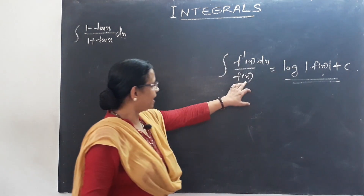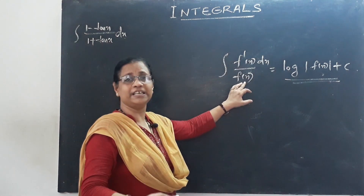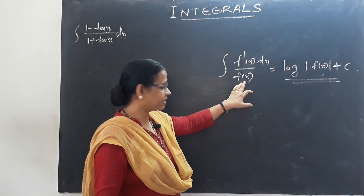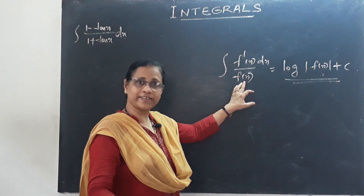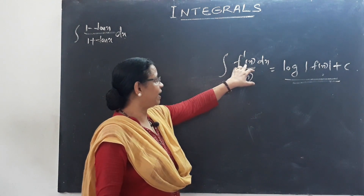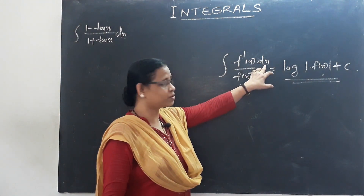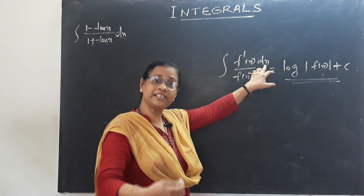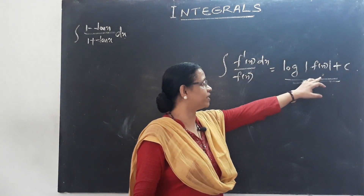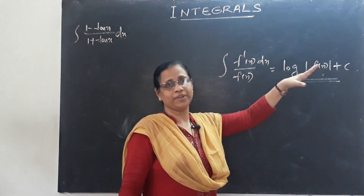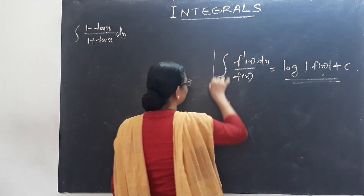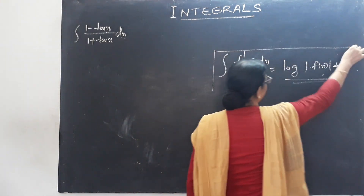That means, let f(x) equal t. We proceed with the denominator: f(x) = t, so f'(x) dx = dt. Then the integral of dt/t equals log t, which equals log f(x) plus c. This is the third method.